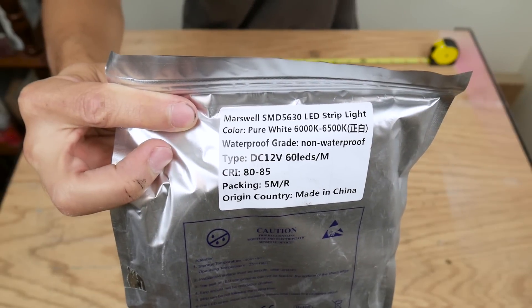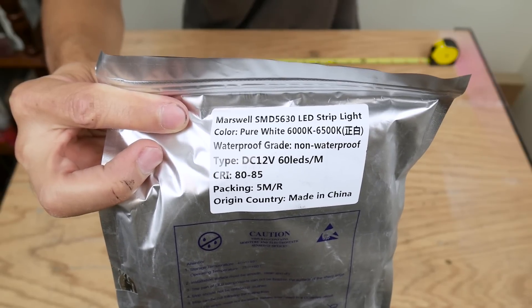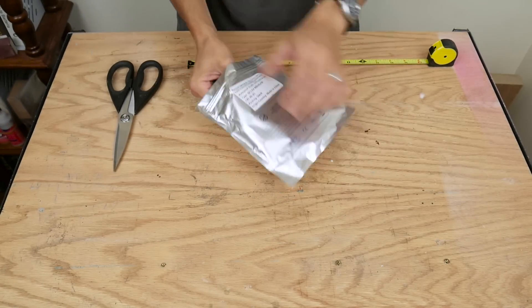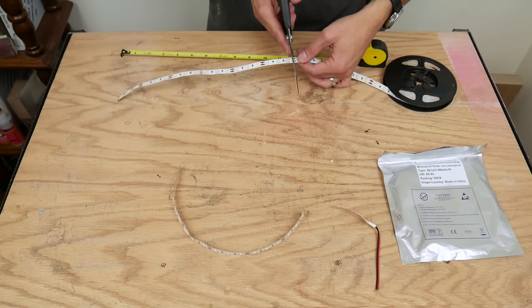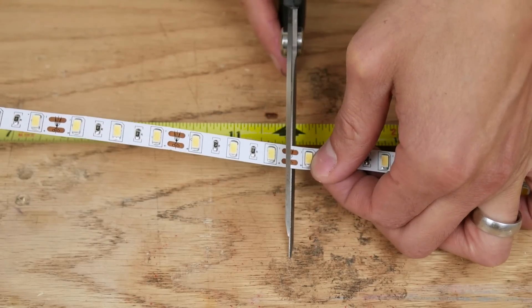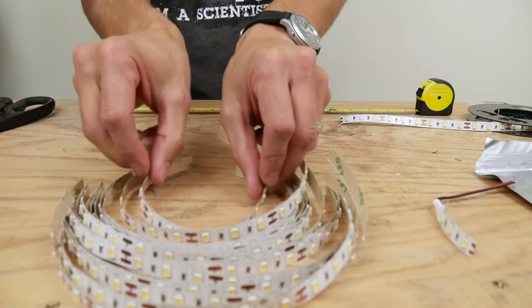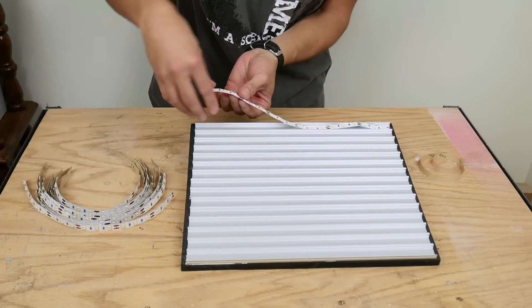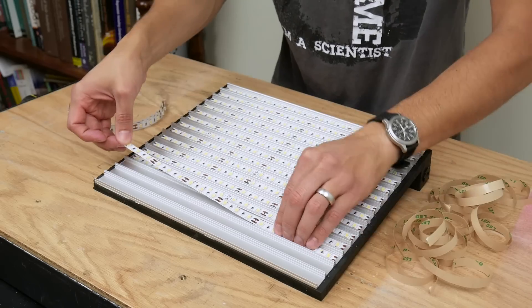The LEDs I used were ones with the highest CRI, color rendering index, I could find. Most LED strip lights give off weird color casts, but these don't. I cut the LEDs into 15 strips that were each just under 12 inches and I made sure to cut at the specified cut marks. The LED strips have adhesive backing that I removed and I stuck the strips into the aluminum channels. The channels make it easy to line everything up well.